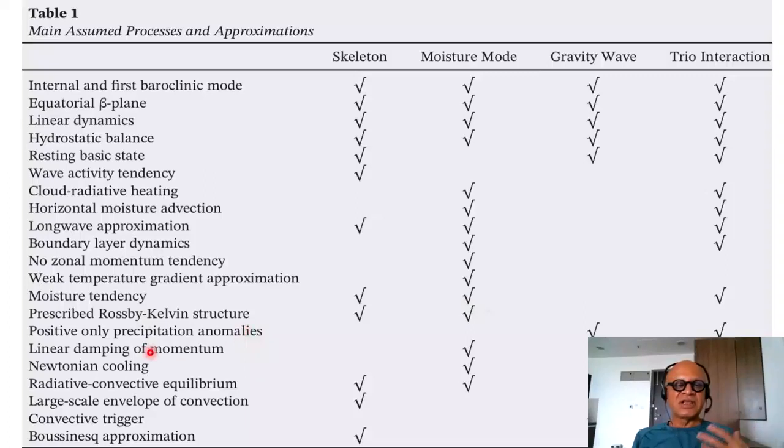Positive only precipitation anomalies, so only capturing the convective phase of MJOs. Linear damping of momentum, what is the approximation made in the frictional effects as it propagates. Newtonian cooling, so how the radiative balance is affected. Radiative convective equilibrium. Large scale envelope convection, so the planetary scale features. Convective triggers and Boussinesq approximation.